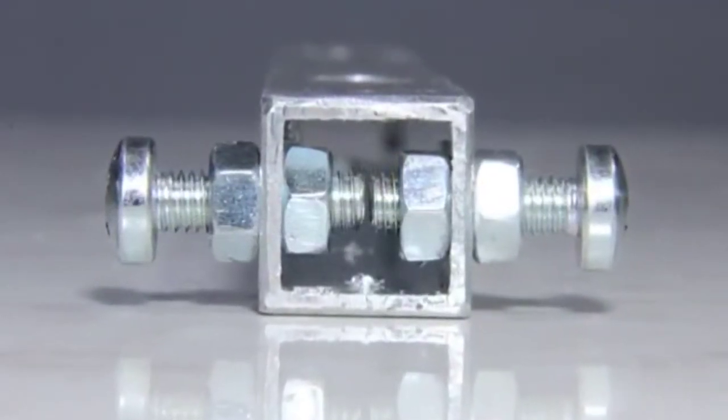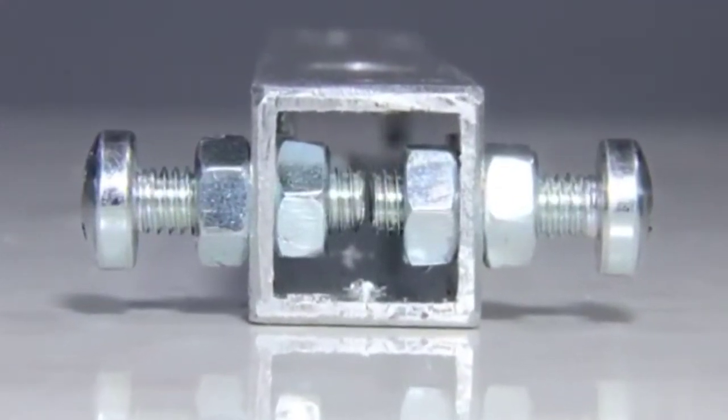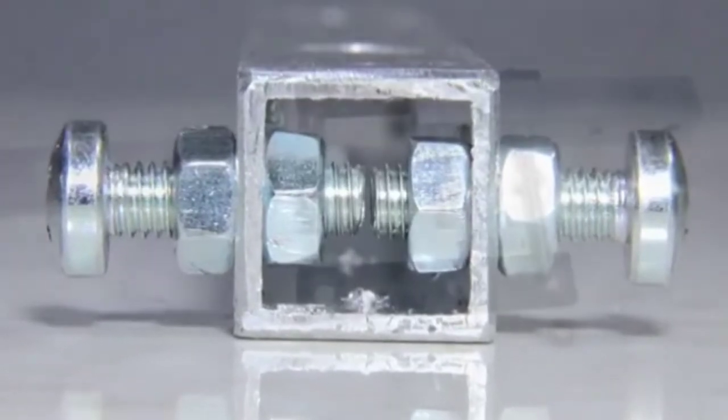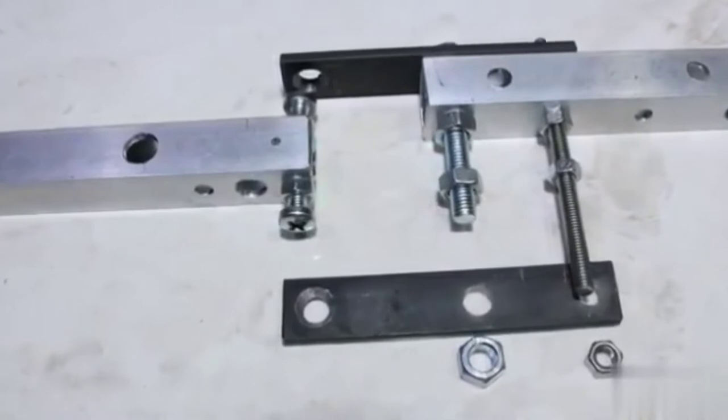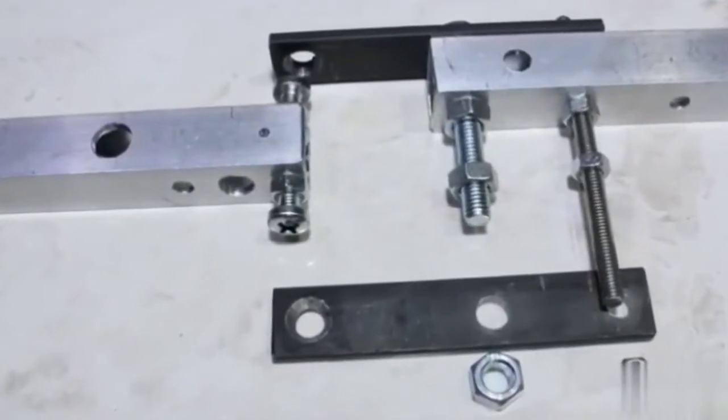Two 6mm screws are screwed on one aluminum square tube with a total of 4 nuts. One of the two flat bars is attached to the second square tube with two pieces of threaded rods.